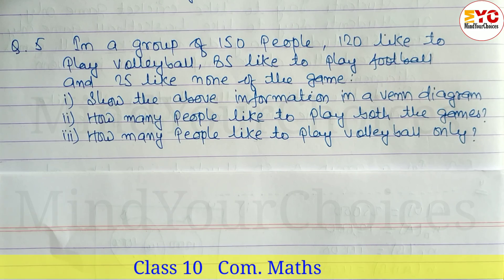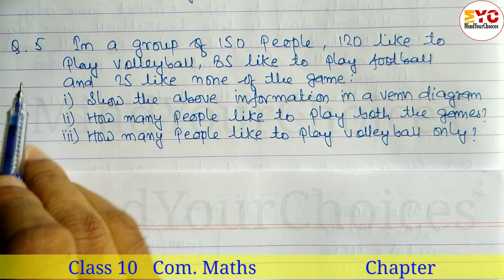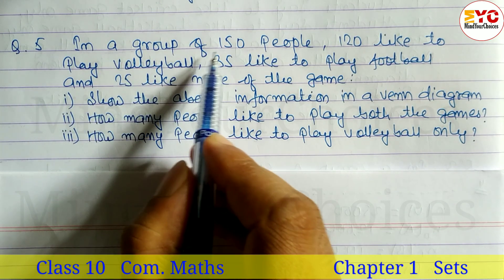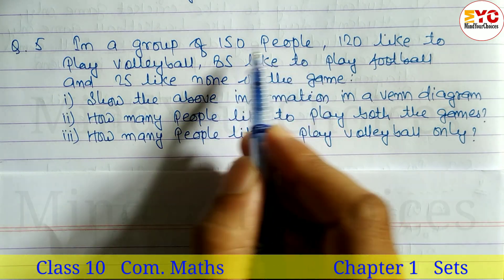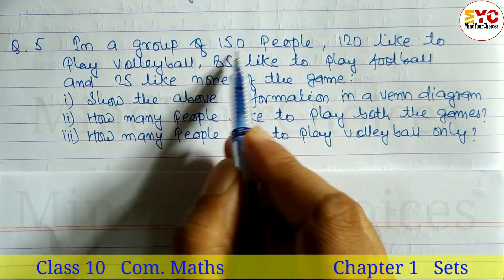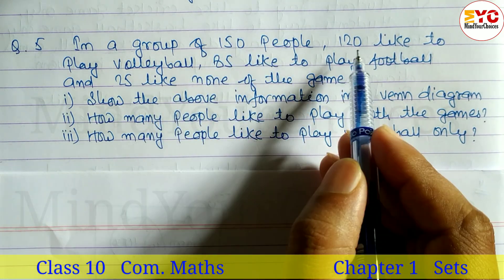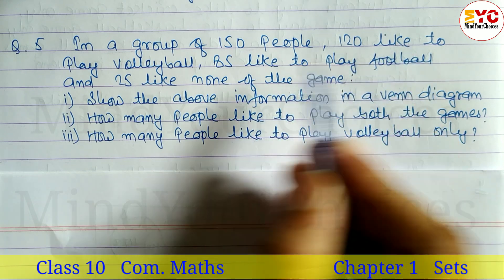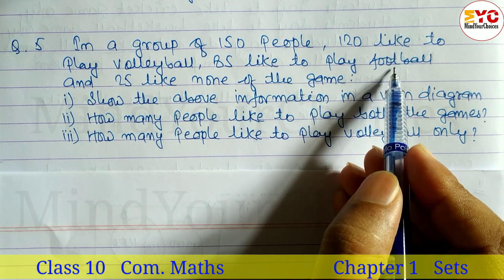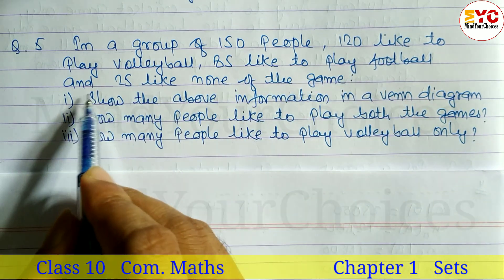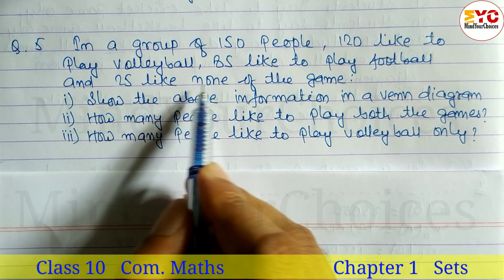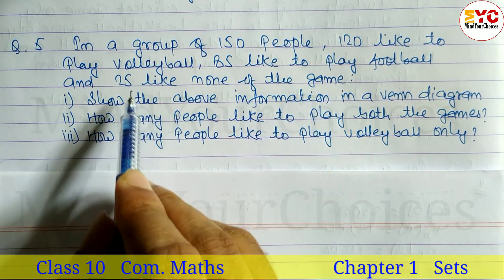Question from class 10 Sets: In a group of 150 people, the total number of people is equal to 150. 120 like to play volleyball, 85 like to play football, and 25 like none of the games.